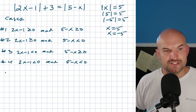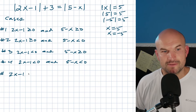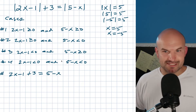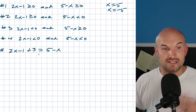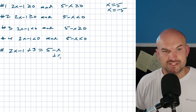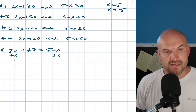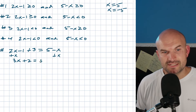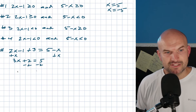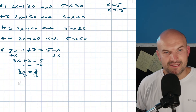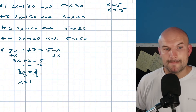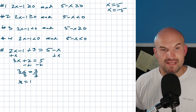Let's look at case number one — when they're both positive. We simply write 2x minus 1 plus 3 equals 5 minus x. Adding x to both sides gives 3x plus 2 equals 5. Subtracting 2 gives 3x equals 3. Dividing by 3, x equals positive 1. So that is one solution.